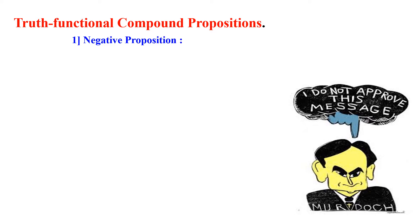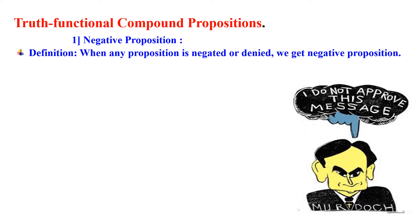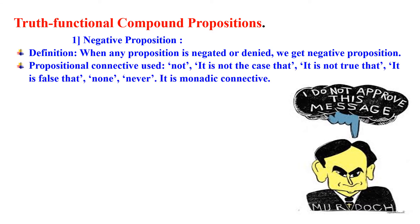When I say 'I do not approve this message,' what am I doing? I am using the connective 'not,' so it is a negative proposition. When any proposition is negated or denied, we get a negative proposition. The propositional connectives used are: not, it is not the case that, it is not true that, it is false that, none, never. This connective is a monadic connective because it connects only one proposition.